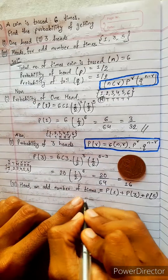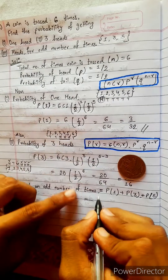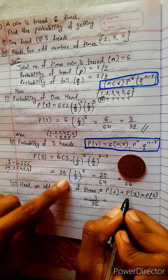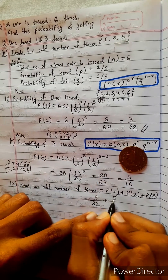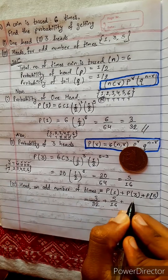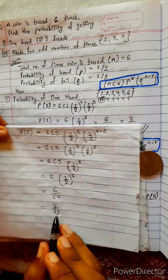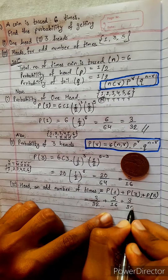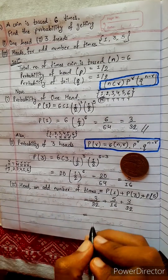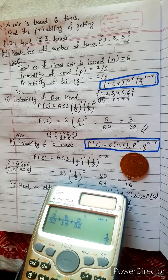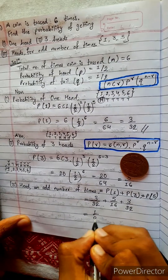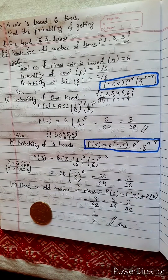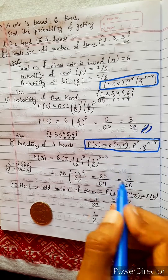Now look: P(1) is three by thirty-two, plus P(3) which is five by sixteen, plus P(5) which is again three by thirty-two. Adding these with common denominator thirty-two, this equals one by two. So we got all answers.